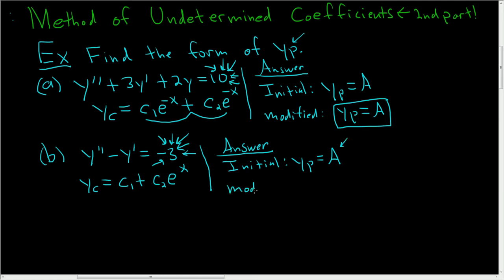Now let's see if it needs to be modified. So y sub p. When you're making your modified guess, then you look at the homogeneous solution. Oh, look, there's a constant here. So in this case, we need to multiply this by x.